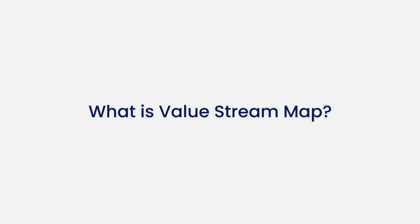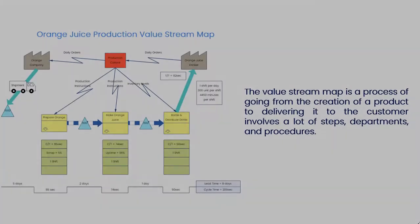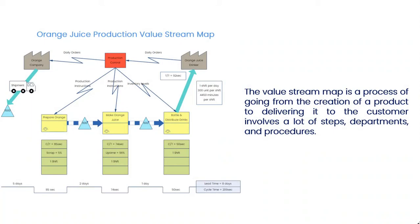Hello all, welcome to eDraw Max. Let's begin with understanding what value stream mapping is. A value stream map is a flowchart that shows every step in the process of creating a product and delivering it to the customer. This usually involves a lot of steps, departments, and procedures.